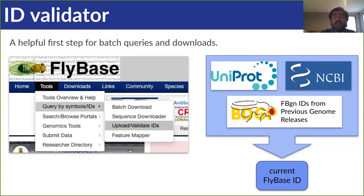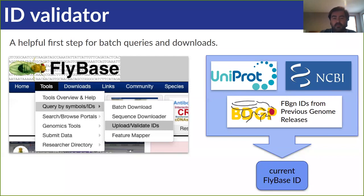Next up is our ID Validator, formerly ID Converter. For anyone that has a list of Flybase features and wishes to perform a batch query or download, this tool provides a useful starting point. It cleans up that list to make sure downstream steps run more smoothly. The ID Validator updates Flybase symbols and IDs where necessary and also converts certain external IDs — like GenBank, UniProt, and PubMed IDs — into their Flybase equivalents. The output is a validation table that can be downloaded as a file or exported to various Flybase tools.